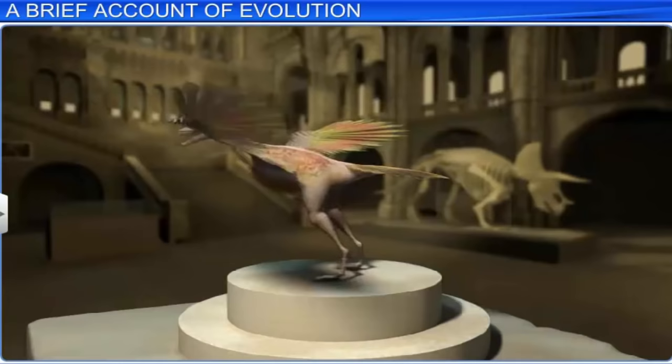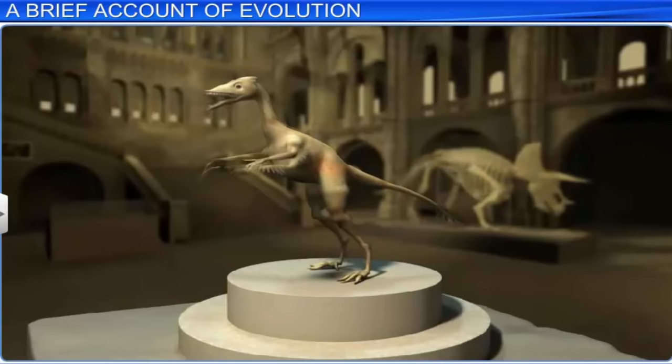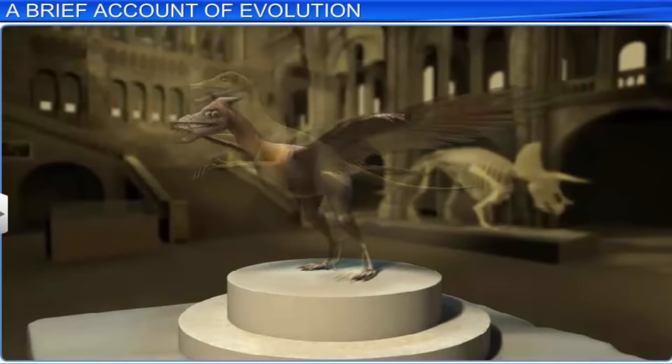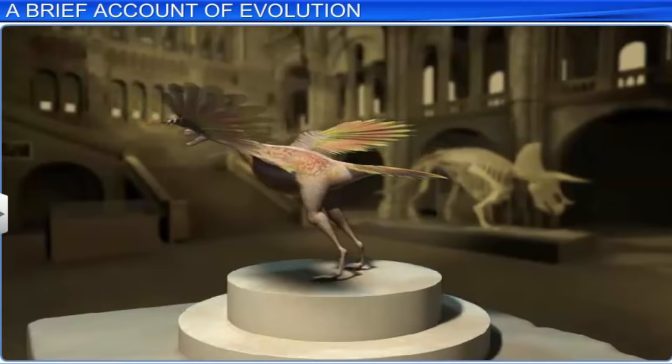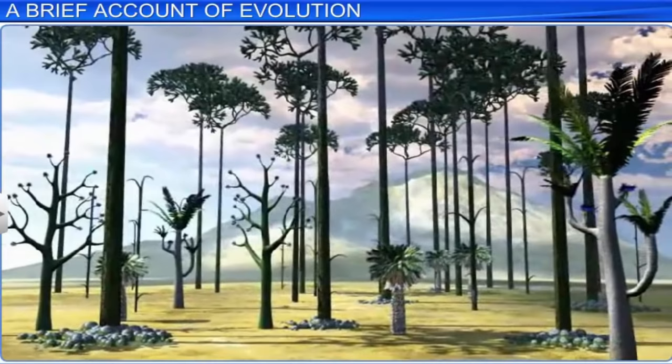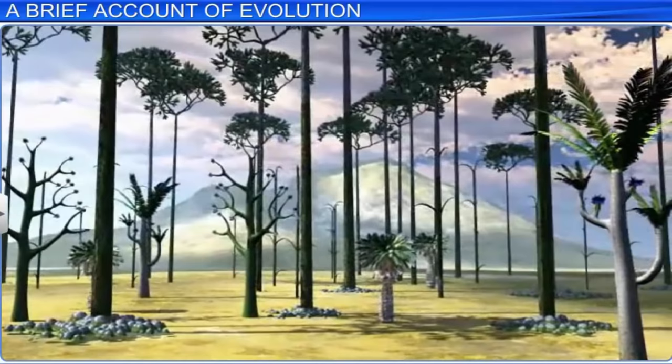It is estimated that birds descended from reptilian ancestors such as Ornithischian dinosaurs during the Jurassic period of the Mesozoic era. Birds became modernized in the Cretaceous period of the Mesozoic era. The flora in the Mesozoic era was dominated by flowering plants and non-flowering plants such as ferns, pines, conifers, and cycads.